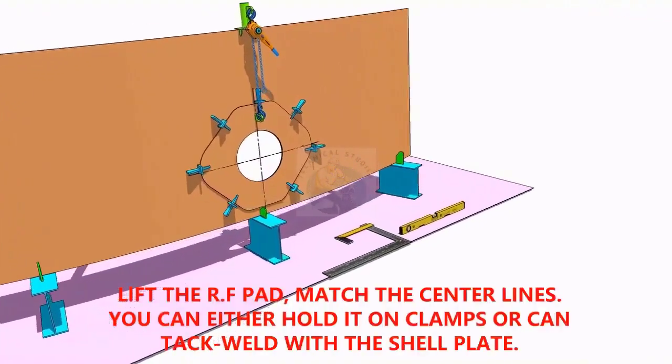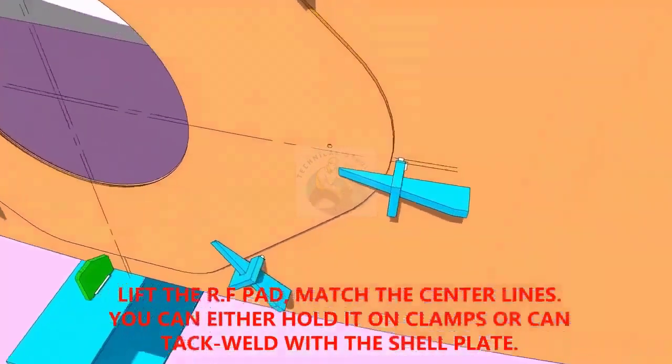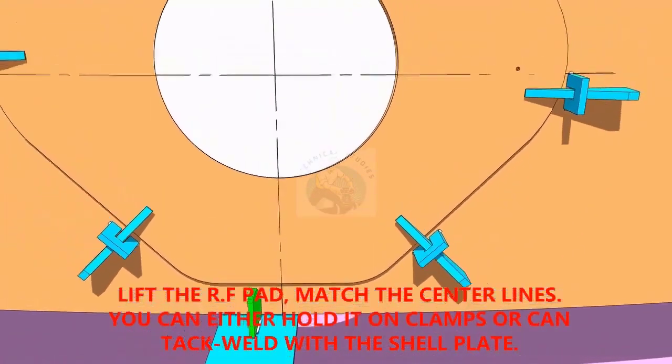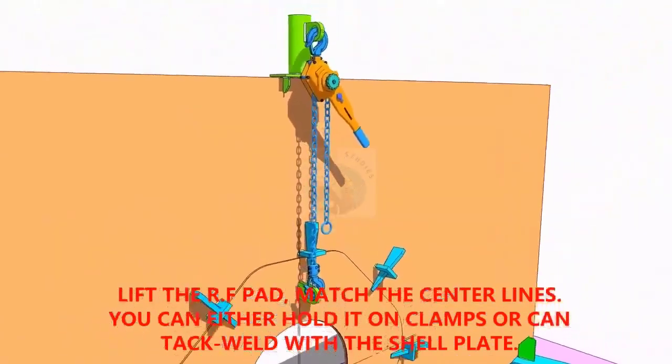TAC weld the reinforcement pad on the shell plate. You can either TAC weld directly on the shell or fix it with clamps as shown. Make sure the center lines on the shell plate and the pad are matching.